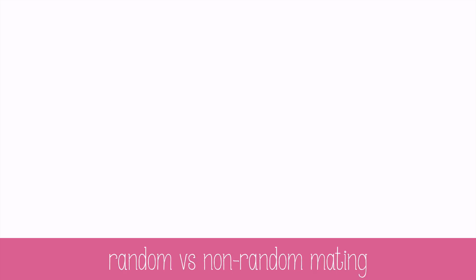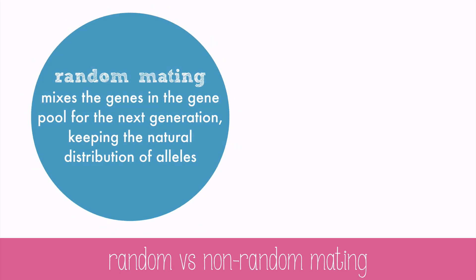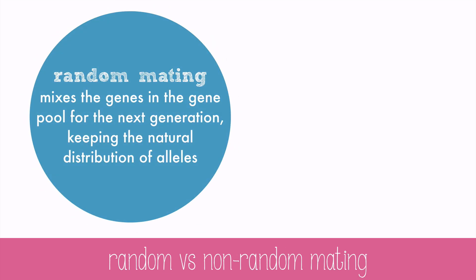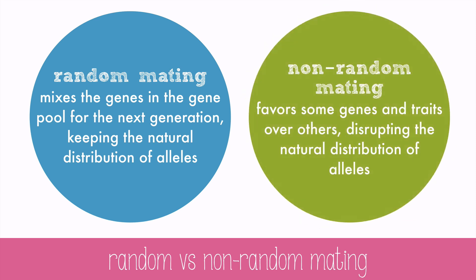Another important part of the Hardy-Weinberg equilibrium is random mating, because it will completely mix the genes in the gene pool for the next generation, keeping the natural distribution of alleles. The trouble is that many organisms, like most humans, do non-random mating, which means choosing a sexual partner for reasons, and not just mating with any random member of the opposite sex. This will cause some genes to be favored and others unfavored, which will lead to microevolution.